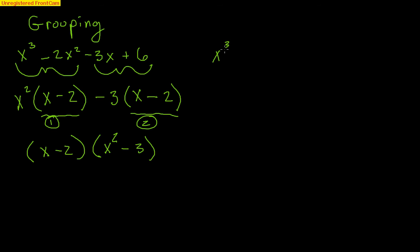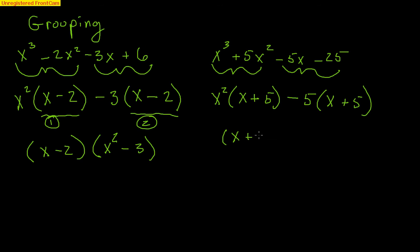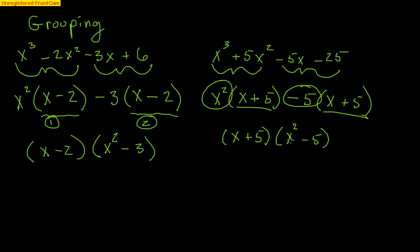Another grouping example: x cubed plus 5x squared minus 5x minus 25. From the first two terms, pull out x squared, leaving x plus 5. From the last two terms, pull out negative 5, leaving x plus 5. Both groups share x plus 5, so factor that out. What's left over is x squared minus 5. The factored form is x plus 5 times x squared minus 5.